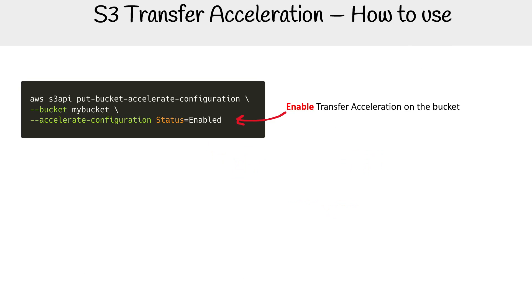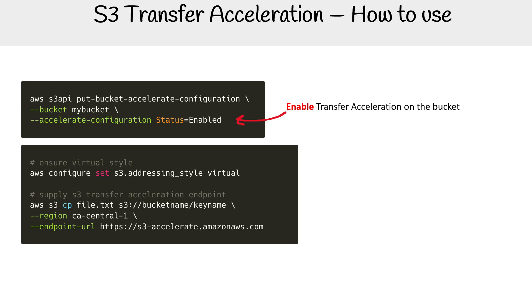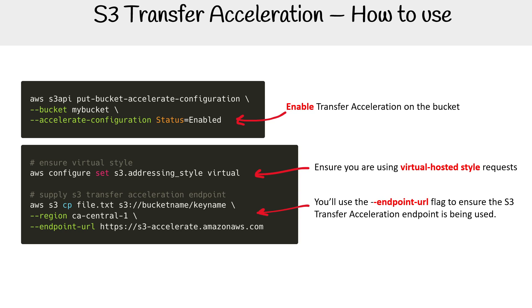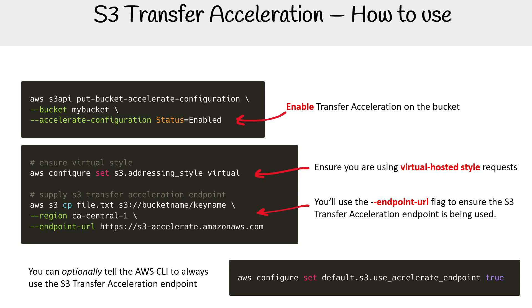Using it is very straightforward. First, enable Transfer Acceleration on the bucket to make sure that feature is turned on. Then, globally configure virtual hosted-style requests so everything will utilize that. Next, specify the endpoint URL — here we're putting in the standard endpoint so it will use that during upload. If you want to always use the accelerated endpoint without supplying the endpoint URL every time, you can also globally set that as well.